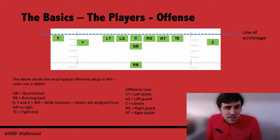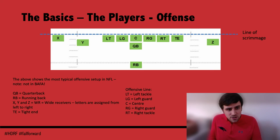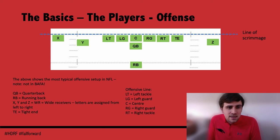You do have tight ends, but not often in the UK. The offensive line consists of two tackles — the left tackle and right tackle on the outermost positions — two guards on the inside of the tackles, and the centre right in the middle. The centre is the one who touches the ball on every play along with the quarterback, and snaps the ball to whoever is going to receive it.